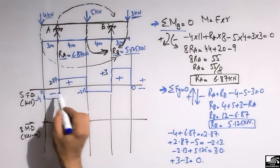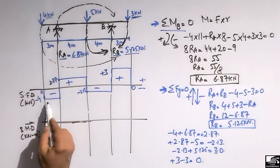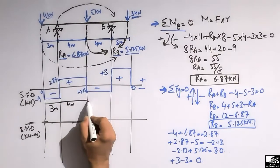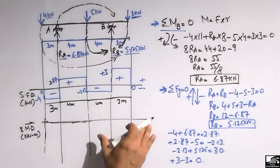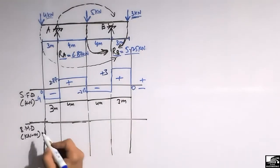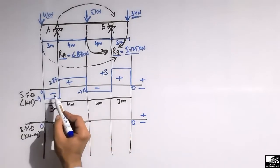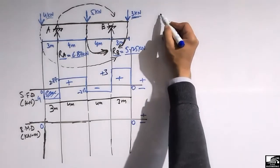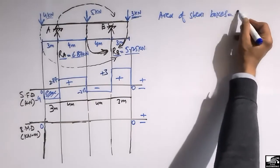This completes the shear force diagram, showing positive and negative shear regions. Now to draw the bending moment diagram — the dimensions are: 3 m, 3 m, 4 m, 4 m, and 3 m. The reference lines are set up with above being positive and below being negative. The area of each shear box gives the corresponding bending moment value.